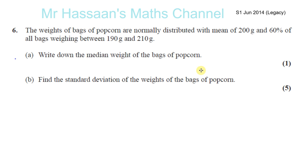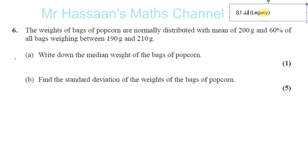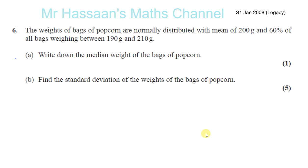Question number six from January 2008 — the old GCE papers, not the IEL papers. The weights of bags of popcorn are normally distributed with a mean of 200 grams, and 60% of all bags weigh between 190 and 210 grams. So the weight is normally distributed with a mean of 200.